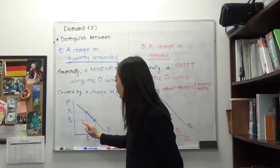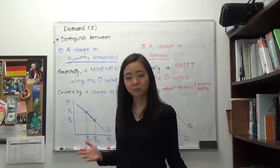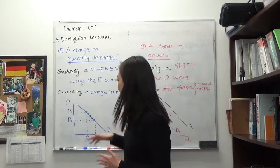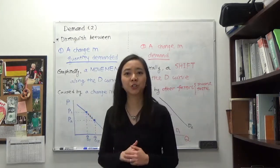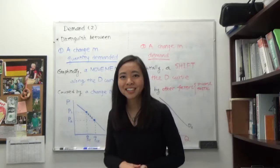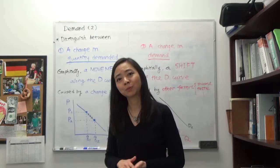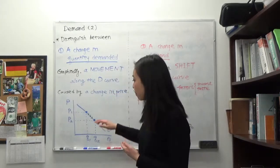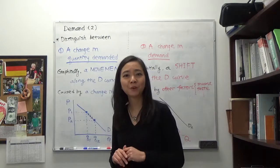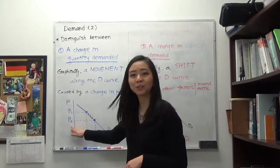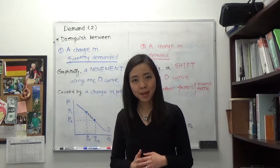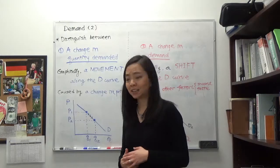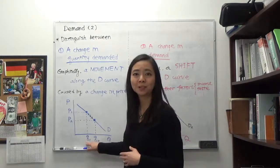So if we're talking about the market of cappuccino, you can see there is an inverse relationship between the price of cappuccino and the quantity demanded of cappuccino. If the price of cappuccino goes down from P1 to P2, then the quantity demanded for cappuccino is going to go up from Q1 to Q2.